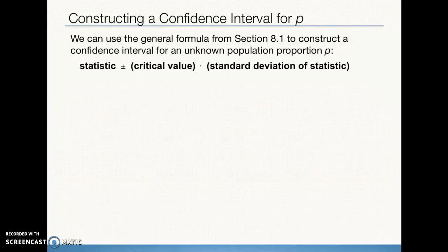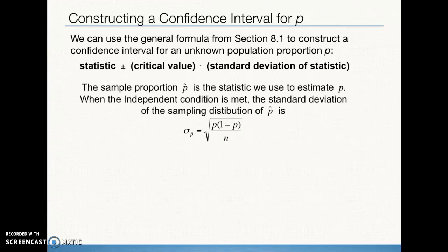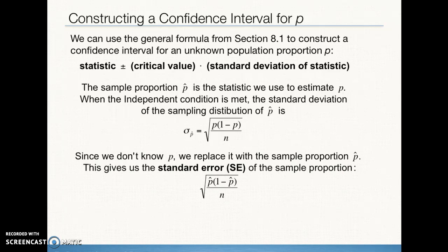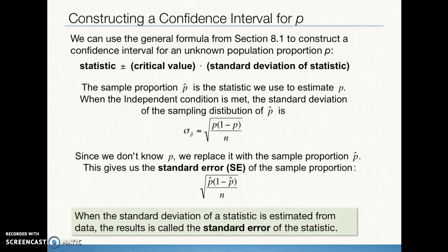The confidence interval format from Section 1 is: sample statistic (p-hat) plus or minus the critical value times the standard deviation of the statistic (the standard error). That product — critical value times standard error — is our margin of error. We use p-hat in place of P in the standard deviation formula since we don't know P.